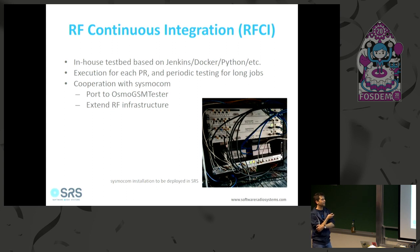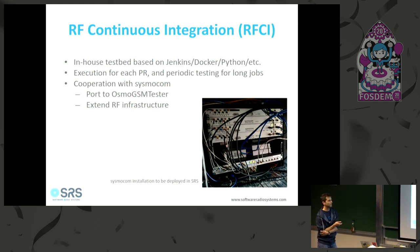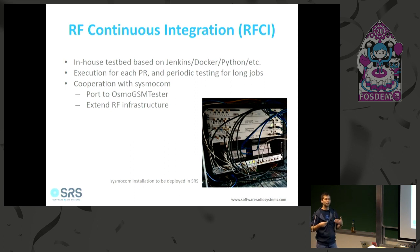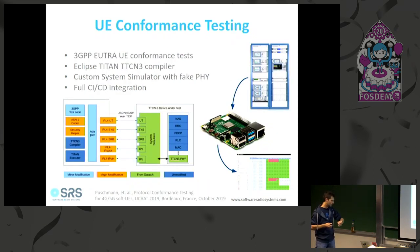This photograph was taken by Harold — it shows an installation at sysmocom where they built a rack with a 19-inch 1U housing containing various RF front ends, all cabled together with variable attenuators and controlled remotely. This allows reproducing experiments and running them continuously, which is something we are looking forward to and extending with osmo-gsm-tester.